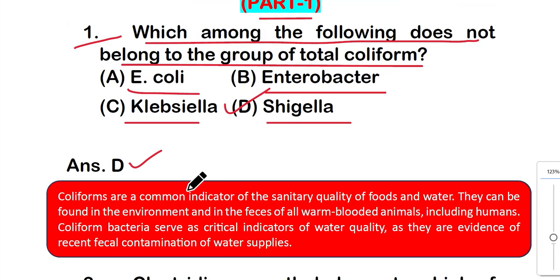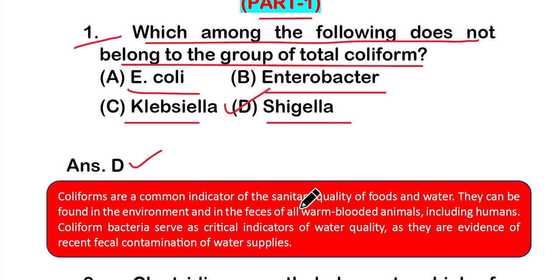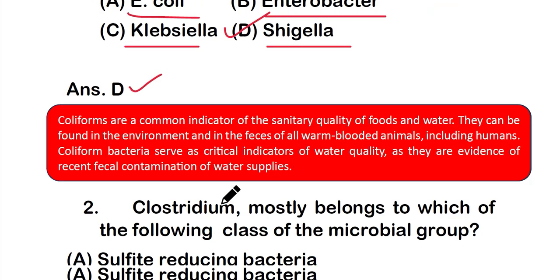Coliforms are a common indicator of sanitary quality of food and water. They can be found in the environment and in the feces of all warm-blooded animals including humans. Coliform bacteria serve as a critical indicator of water quality, as their presence indicates recent fecal contamination of water supplies.